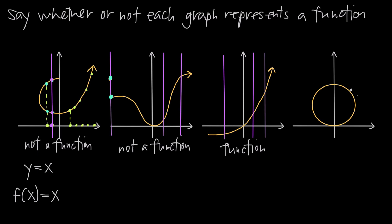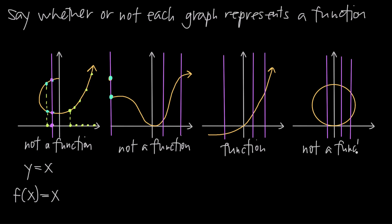If I look at my last graph, I can see that I have a circle, and right away I can tell that I'm going to be able to draw vertical lines that intersect the graph at more than one point. I can draw a line here, a line here, even closer to the edge of the circle, and I still intersect the circle at two points. So this graph does not represent a function. In fact, I can conclude that a circle is never a function because I can always draw a vertical line that intersects it at more than one point. So that's how you use the vertical line test to say whether or not a graph represents a function.